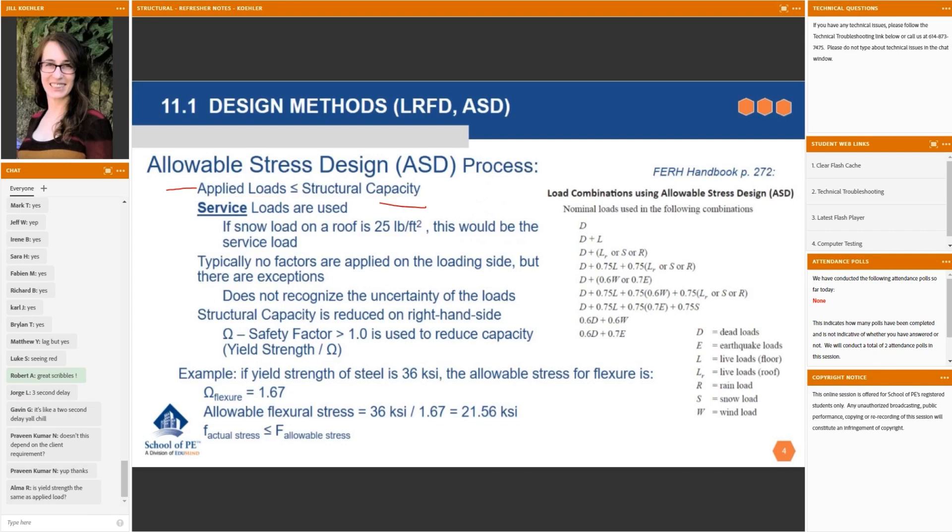Amma says, is yield strength the same as applied load? So yield strength has to do with the material, the capacity of the material. The applied load is on the loading side, right? So if you have a beam with 36 KSI steel and it's a certain size, it can handle a certain load. The applied load is kind of what is dictated by either the problem statement on the exam or by the project requirements. So if the project says you have a classroom with this much weight per foot in that classroom and you have a certain layout of beams, that's the loading side. That's the applied load.